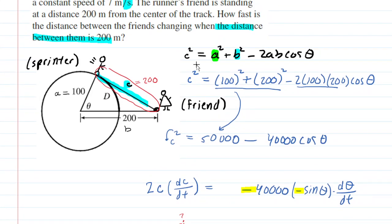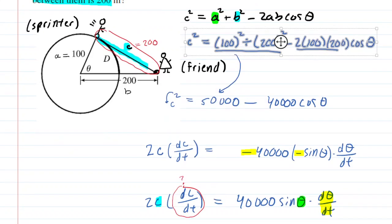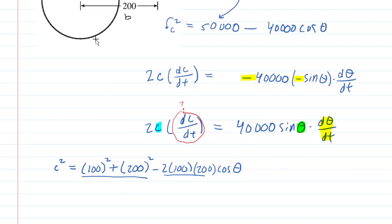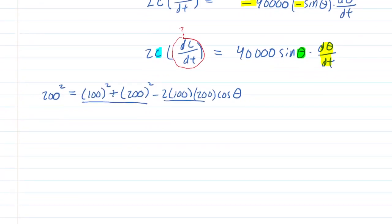We go back to our law of cosines equation, this one right here. And we scoot down here and we know that at the moment of calculation that the distance between them is 200. So what this means is for c, you're going to plug in 200 and this is going to help you calculate the angle the moment that the sprinter and the friend are 200 meters away.